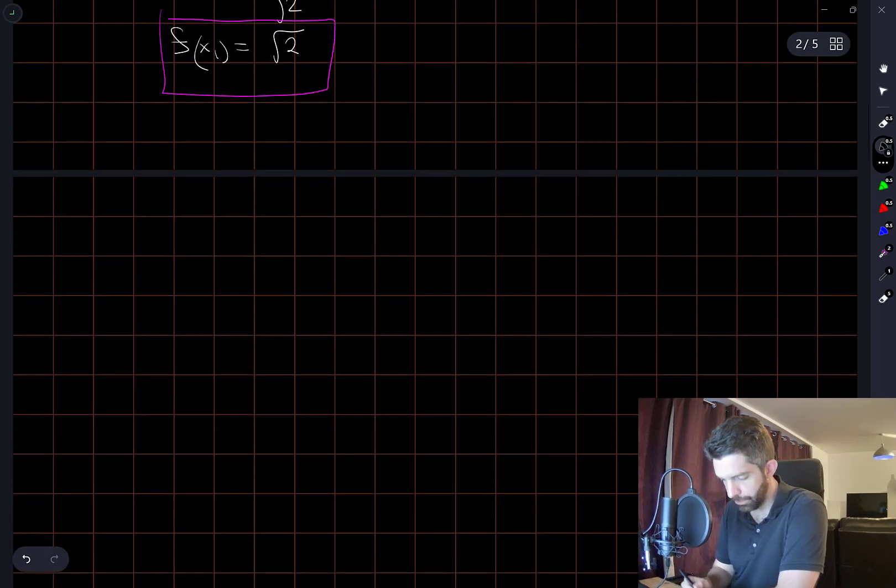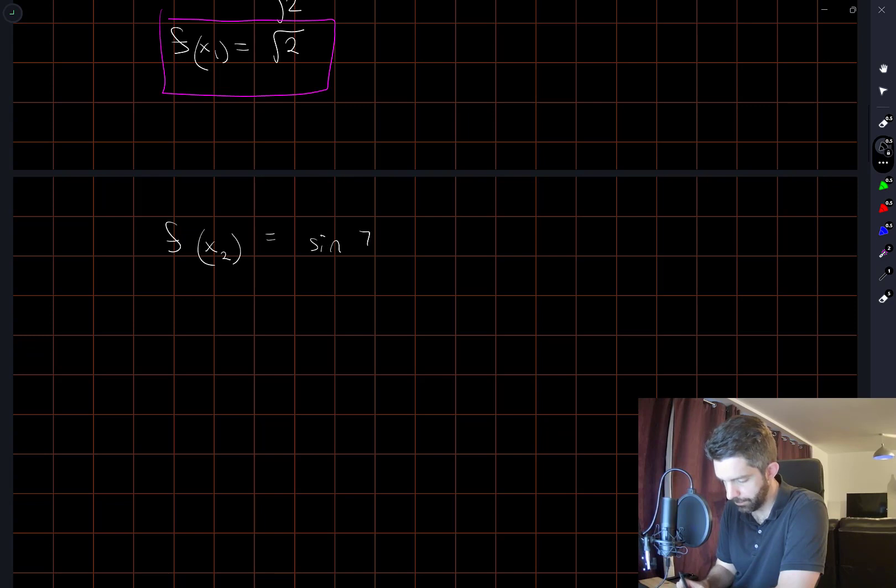Okay, if I go through the same thing with f of x2, sine of 7π over 4 minus cosine of 7π over 4. Well now the coordinate that gets reflected is the other one. So this is equal to negative sine of π over 4 minus cosine of π over 4. I'm not going to do all the substitutions here, but this is going to be equal to negative square root of 2.